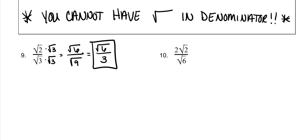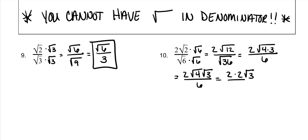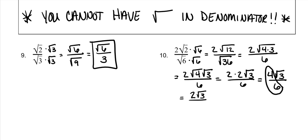We cannot have the square root of 6 in the denominator, so you multiply the top and the bottom by the square root of 6. 2 times 6 is 12, and 6 times 6 is 36. Now 12 is the same thing as 4 times 3, and the square root of 36 is 6. So the square root of 4 times the square root of 3, divided by 6. The square root of 4 is 2, so that's 2 times 2 over 6, which is 4 over 6. Then you can reduce: 2 goes into both — 2 goes into 4 twice, and 2 goes into 6 three times. So your final answer is 2 square roots of 3 over 3.